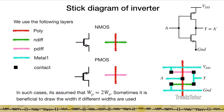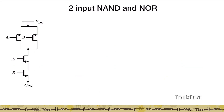Since hole mobility is less than electron mobility, the PMOS tends to be wider than the NMOS, so it sometimes helps to draw the p-diff larger than the n-diff. However, in this video I will not be using that convention.